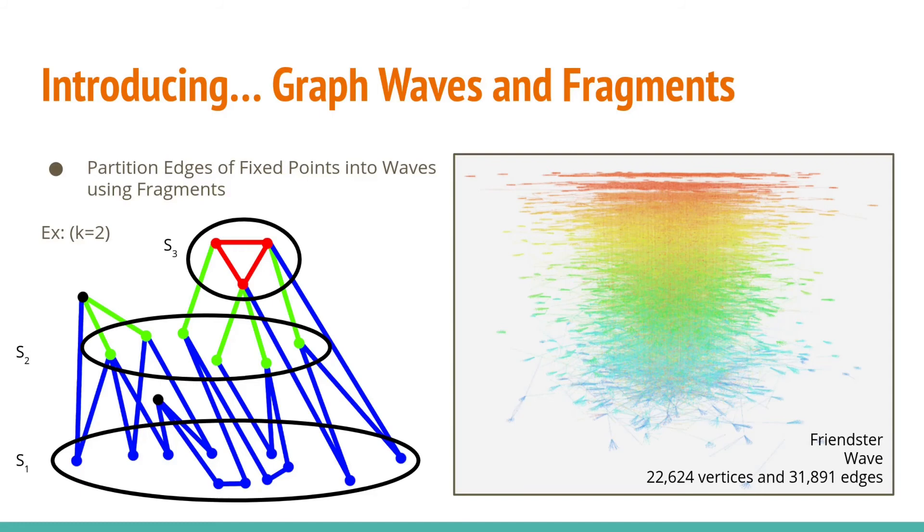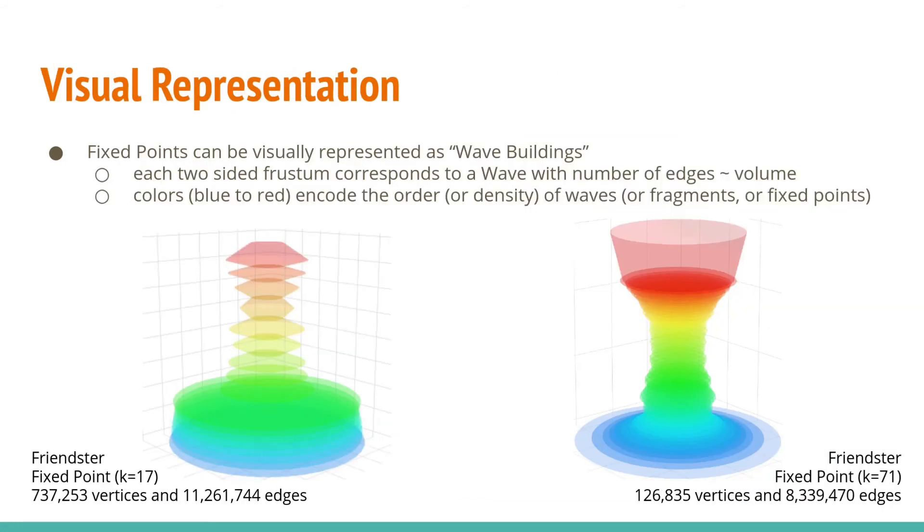The picture on the right shows a collection of 19 fragments colored blue to red from a wave in the Frenster social network. Using the wave decomposition, we can represent fixed points as wave buildings.